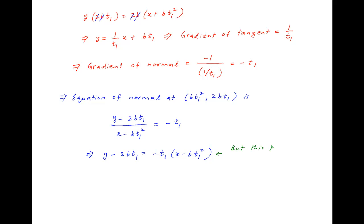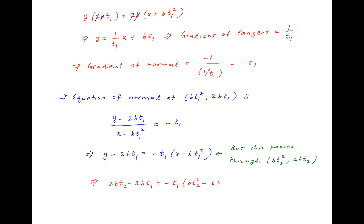Now we are given that this normal passes through the point (bt₂², 2bt₂). Substituting the coordinates of the second point into the equation of the normal, we get 2bt₂ − 2bt₁ = −t₁(bt₂² − bt₁²).